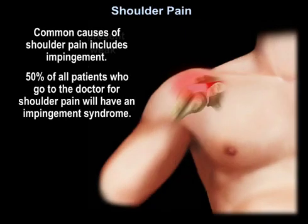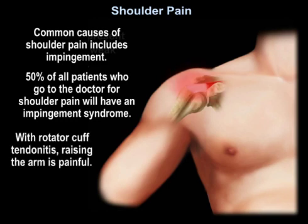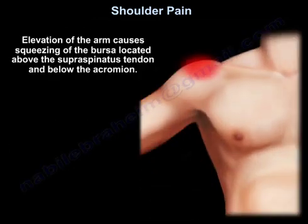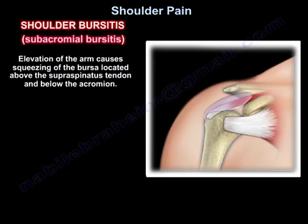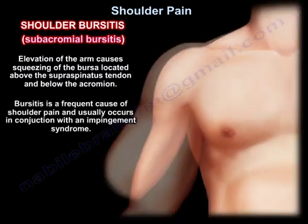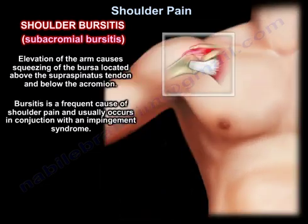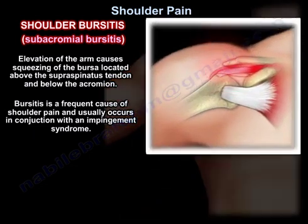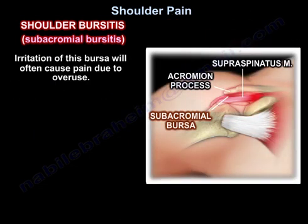Shoulder pain. Common causes of shoulder pain include impingement. 50% of all patients going to a doctor for shoulder pain will have an impingement syndrome. With rotator cuff tendinitis, raising the arm is painful. Elevation of the arm causes squeezing of the bursa located above the supraspinatus tendon and below the acromion. Bursitis is a frequent cause of shoulder pain and usually occurs in conjunction with an impingement syndrome.